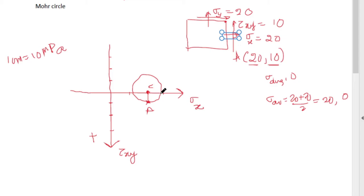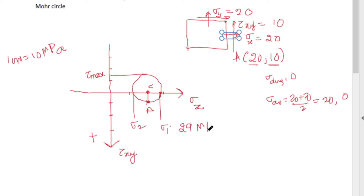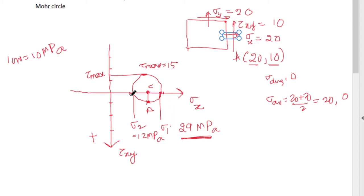From the graph (approximate, not to scale): sigma 1 is approximately 29 MPa, sigma 2 is approximately 12 MPa, and tau max is approximately 15 MPa. Using the scale, convert centimeter measurements to actual stress values. These are the principal stresses and maximum shear stress identified from the Mohr circle.